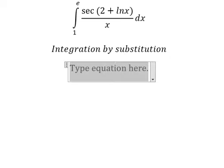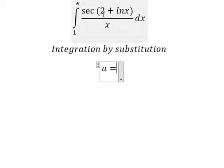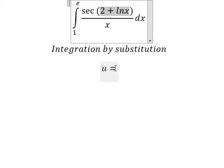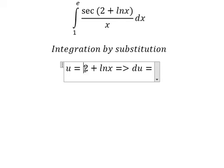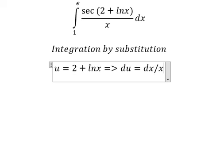I will put u equals to this one. Later we need to do the first derivative for both sides. This one is about the constant, so you got number zero in here. This one we have dx over x.